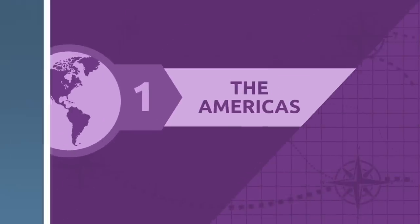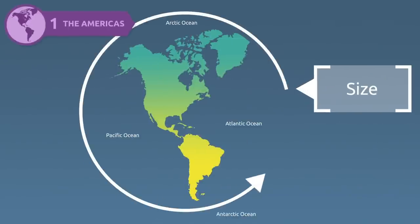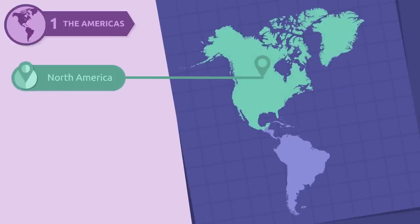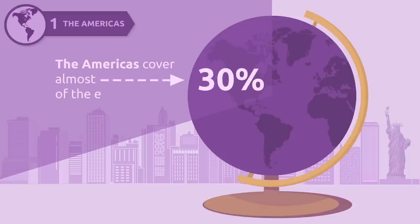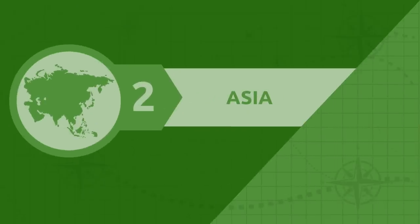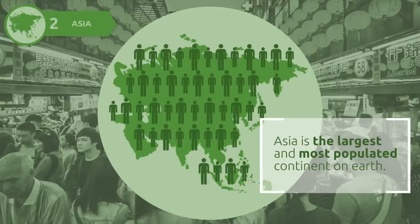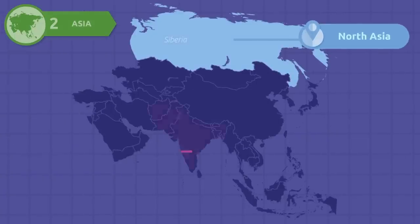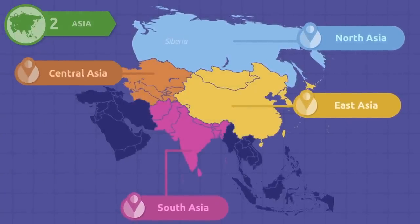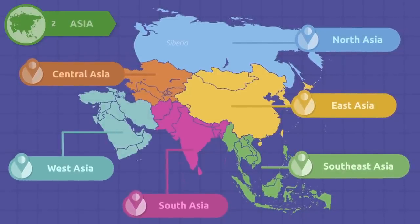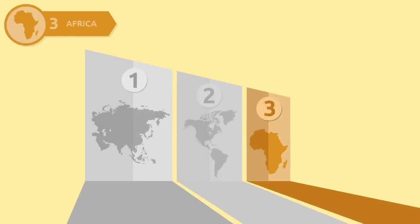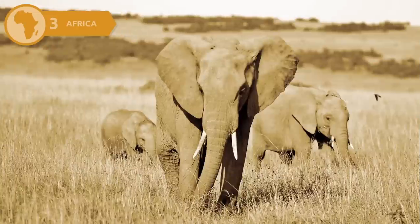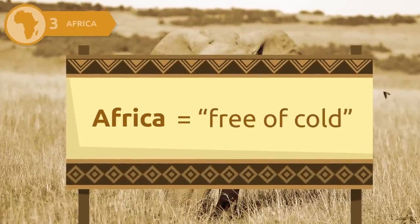The Americas, owing to their size, geographical features, and cultural characteristics, are divided into North America, Central America, and South America — covering almost 30 percent of the earth's total land area. Asia is the largest and most populated continent on earth, divided into North, South, East, Central, Southeast, and West Asia. Africa is the third largest continent in the world after Asia and the Americas — the word Africa comes from Latin and means 'free of cold.'